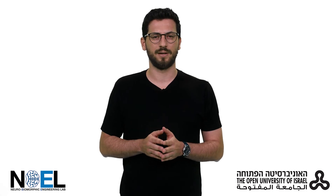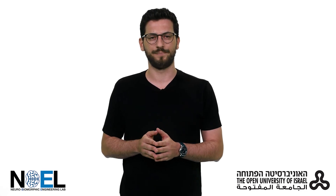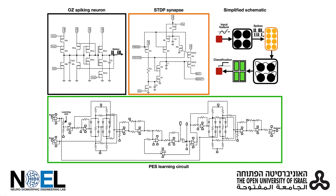To implement learning in real-time, we designed an analog circuitry realizing the PES learning rule. The weight is implemented as a transistor-capacitor memory cell and is continuously modeled using a recurrently connected summing amplifier. The error block can be turned on and off, allowing switching between training and inference working modes.